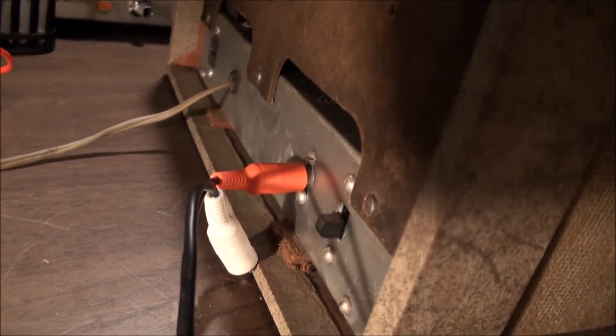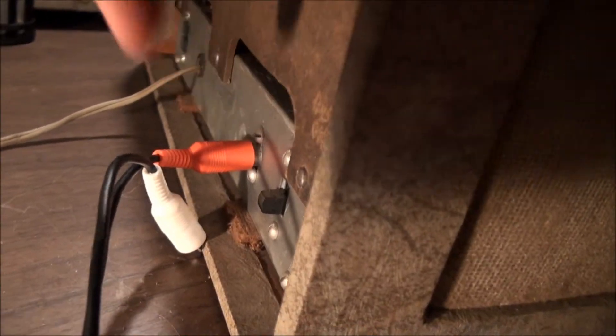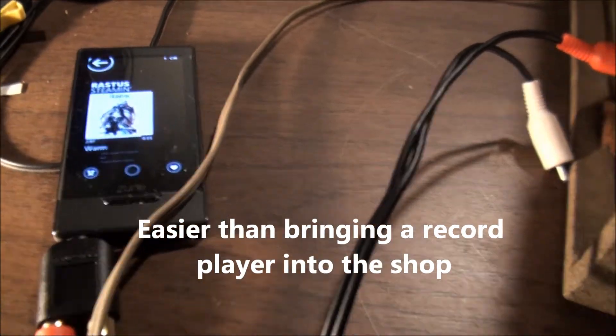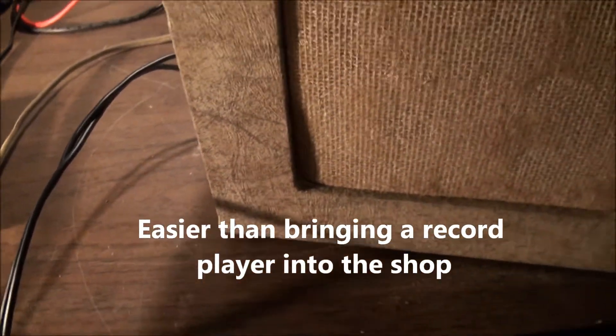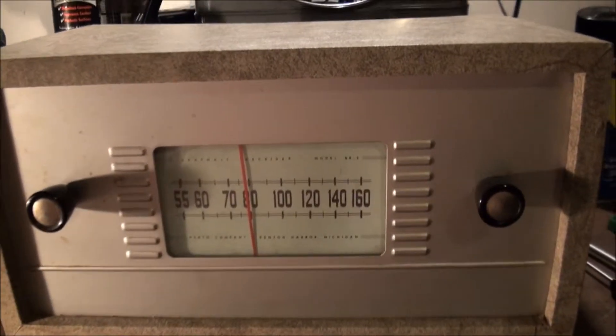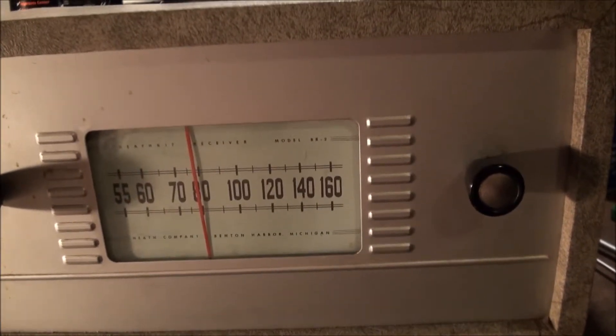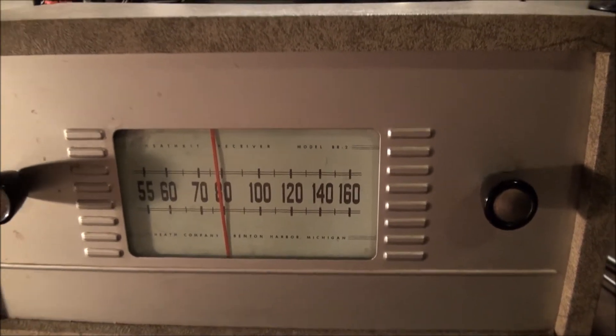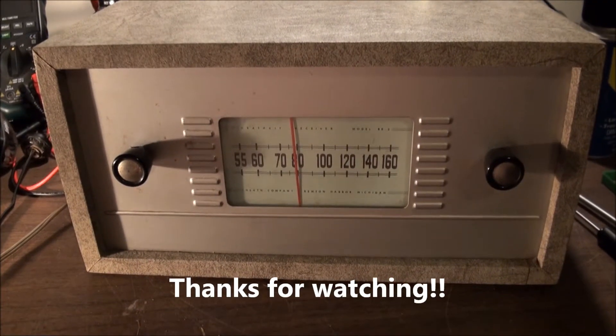I noticed there's an RCA jack on the back and a little switch here. I figured that was for input. Well, I hope you enjoyed this look at the Heathkit model BR2. Thanks for watching, bye!